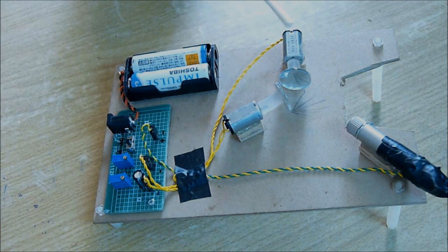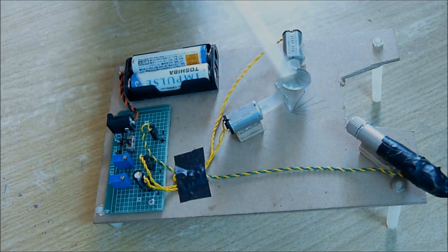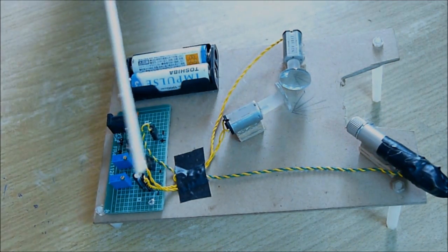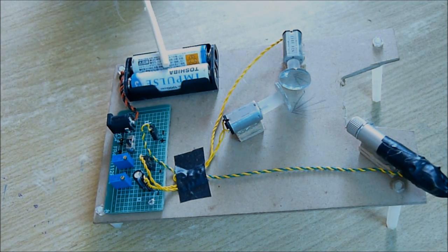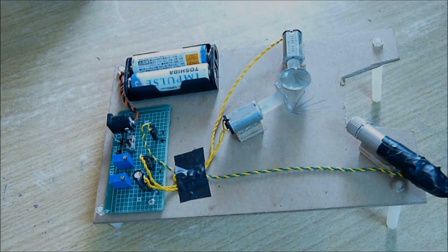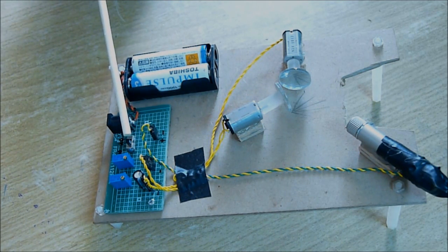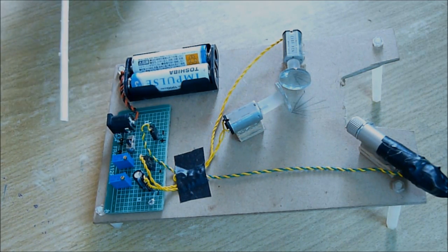I have assembled all and here is the circuit. This is motor one, motor two, and this is the laser. Here is the control circuit. This is the battery. Here you can connect external power supply. This is the power switch.